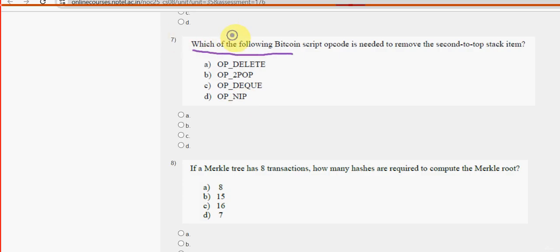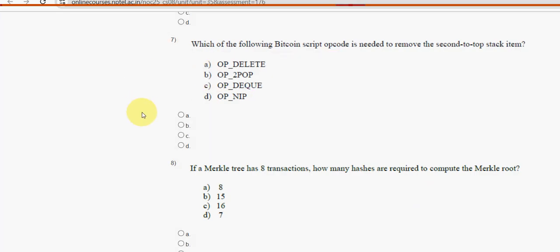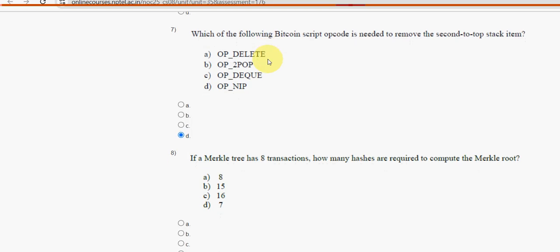Seventh question: which of the following Bitcoin script opcodes is needed to remove the second-to-top stack item? The answer is option D — OP_NIP. Mark option D as the probable solution for the seventh question.